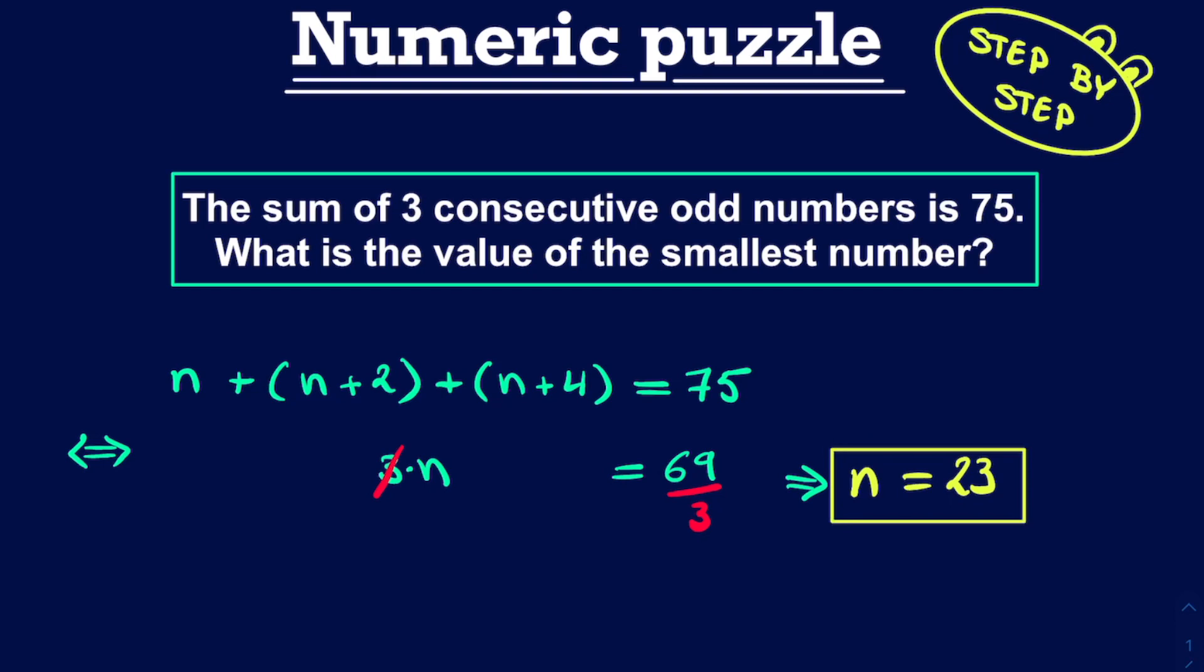Of course, we can always check whether we made any mistakes or not, simply by plugging in this number into our original equation. This gives us 23 plus n plus 2, which is 23 plus 2, or the next consecutive odd number, 25, plus the next consecutive odd number, n plus 4, is 27. Now, is this indeed equal to 75? And if you use your calculator, or you just calculate by head, then you see that this is indeed 75.